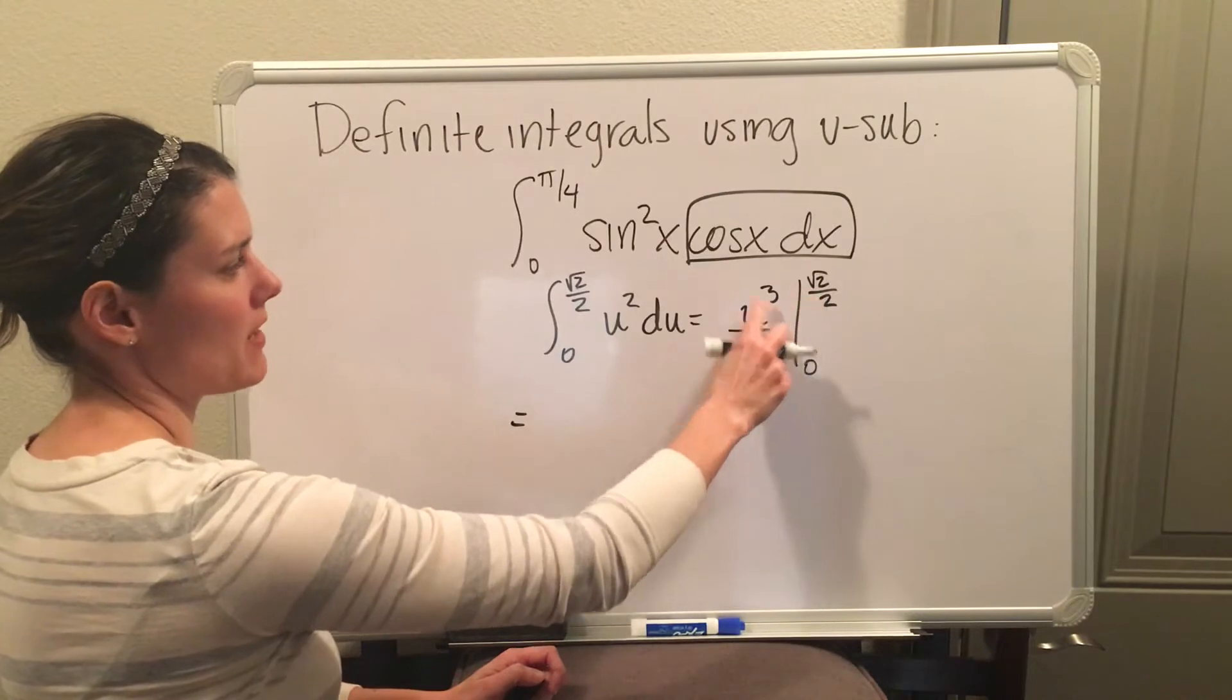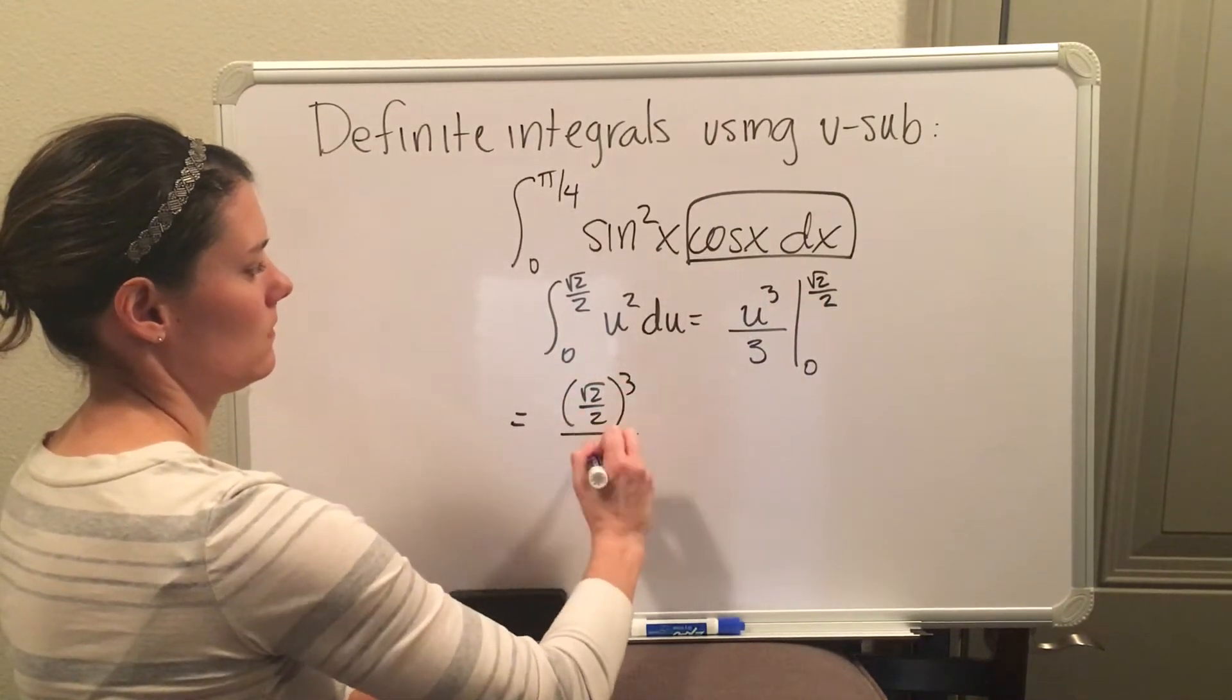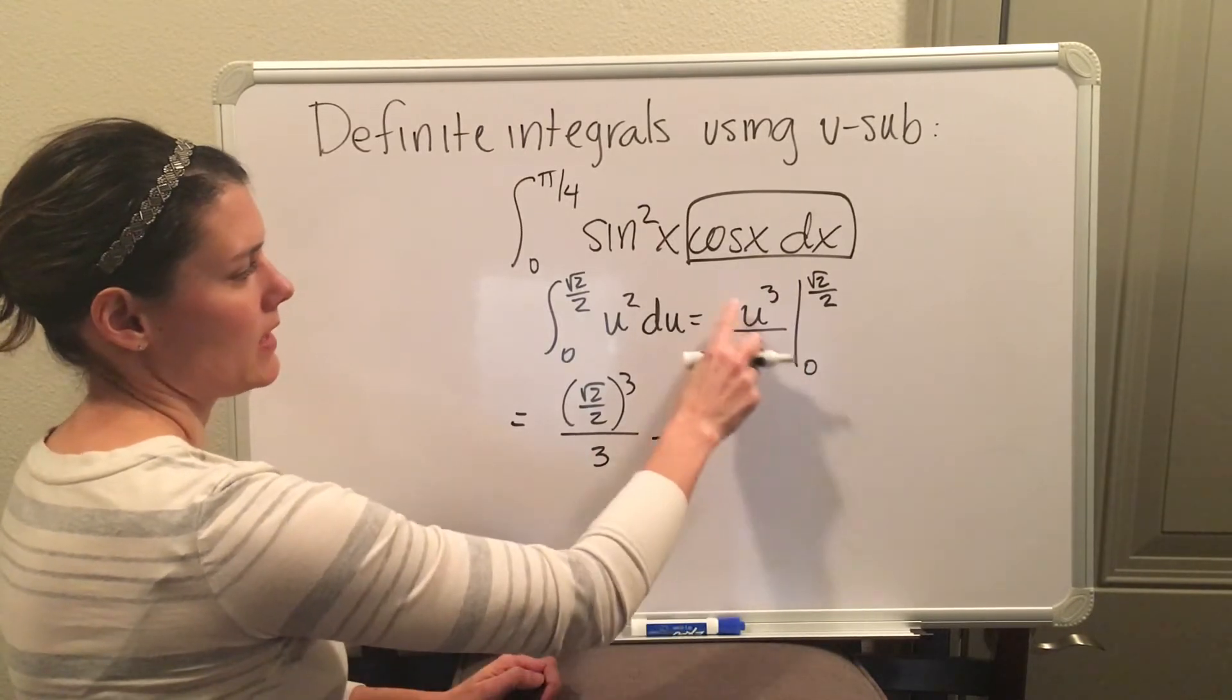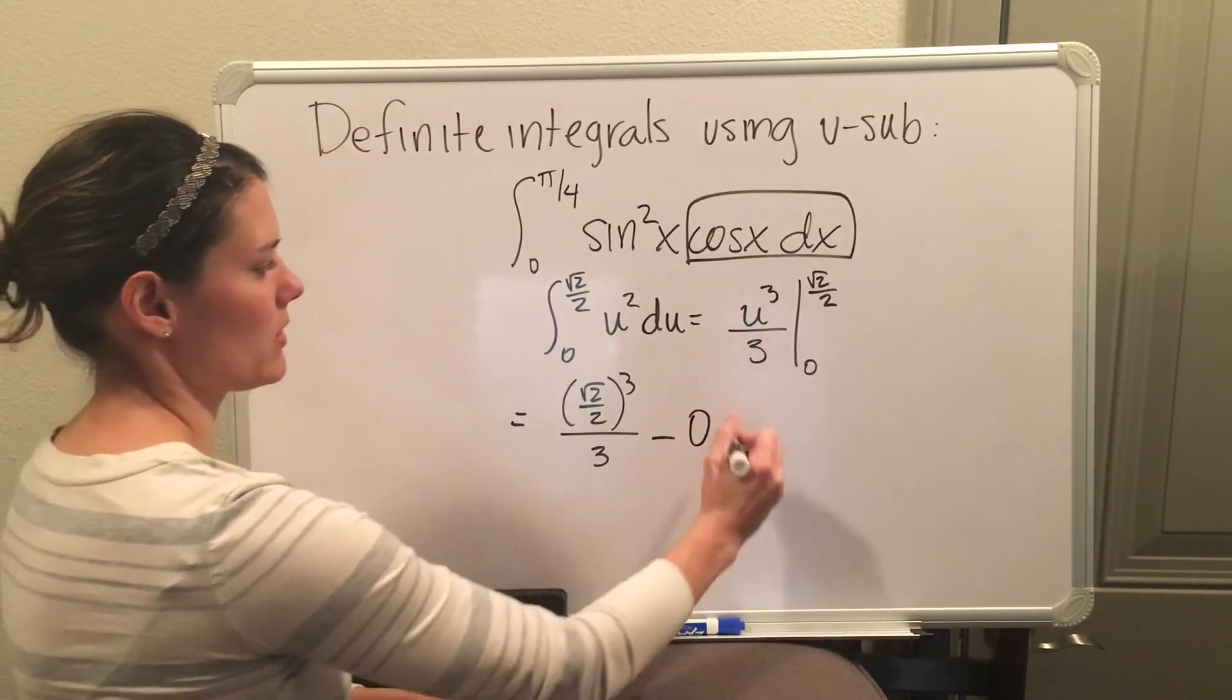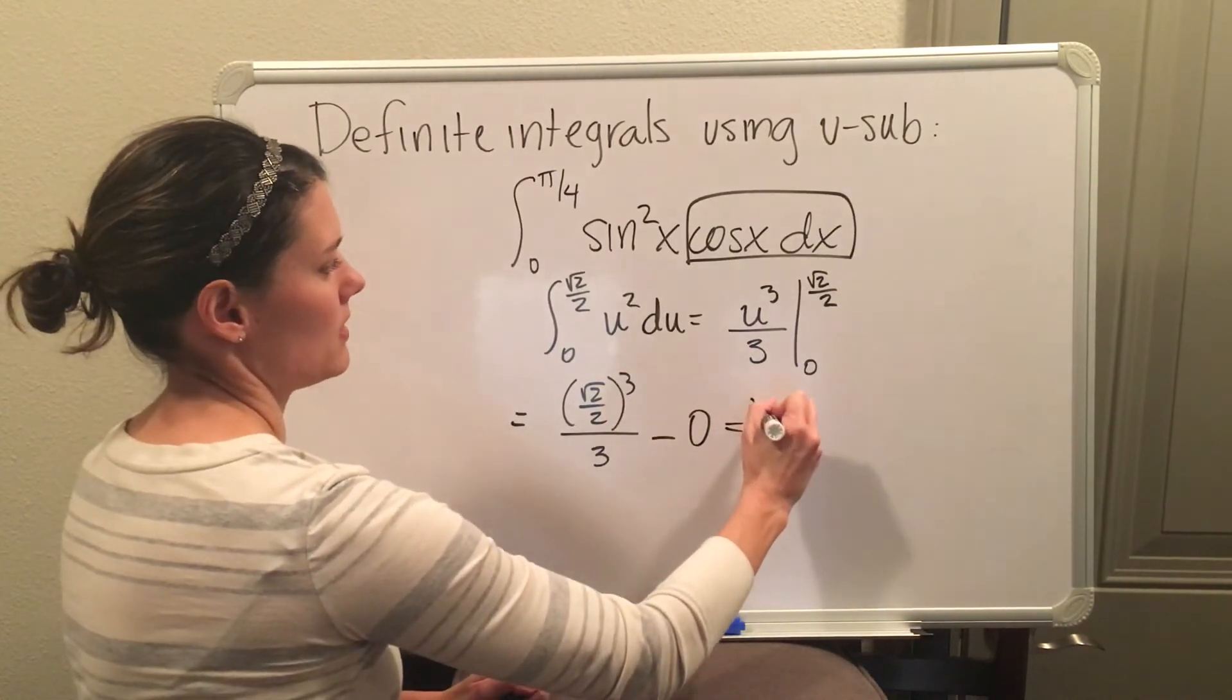Which is you plug in the b value first. And then you're going to plug in the 0, which is 0. And then you can just reduce this a little bit.